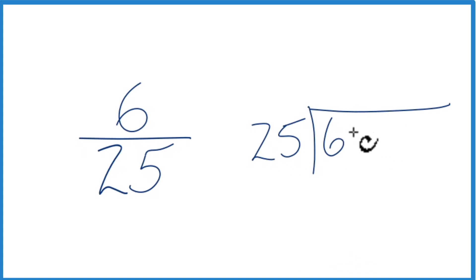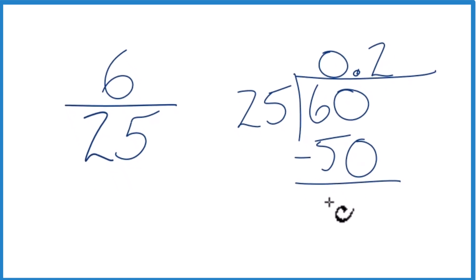25 doesn't go into 6, so we could call this 60 if we put a 0 and a decimal point up here. So now 2 times 25, that's 50. Subtract, we get 10.